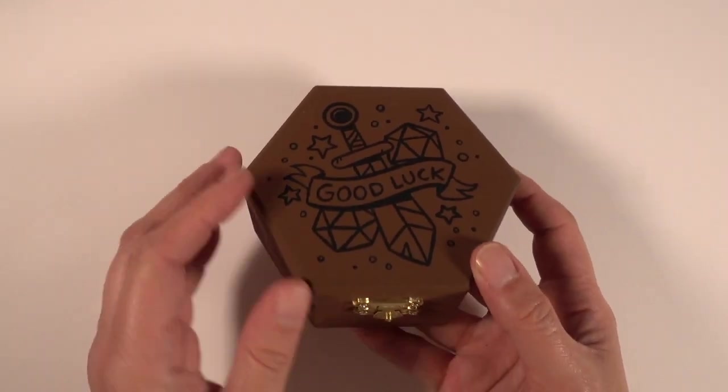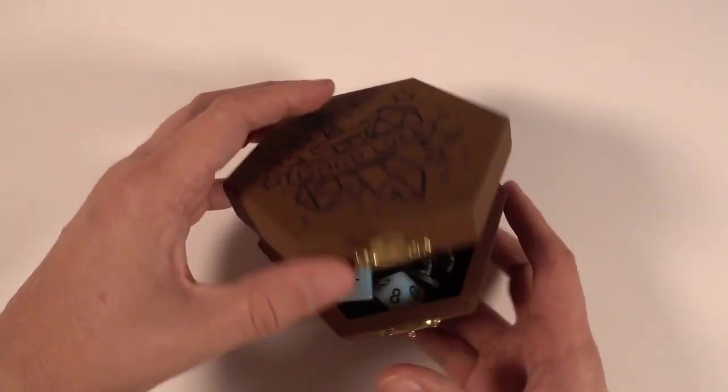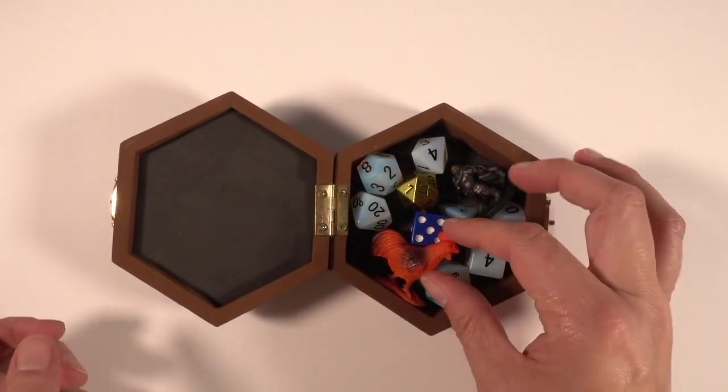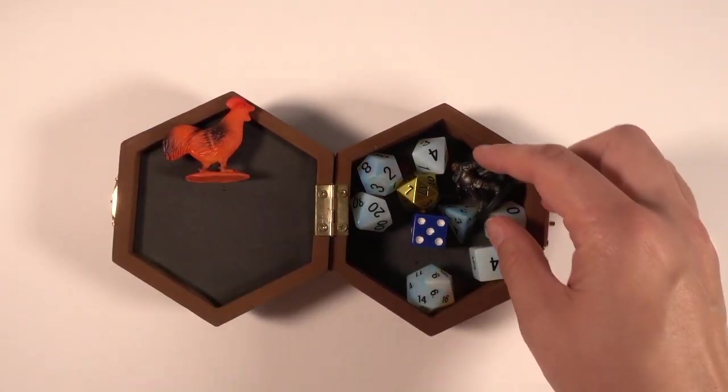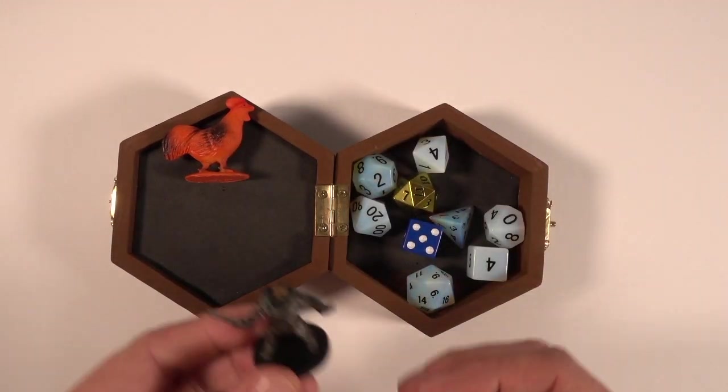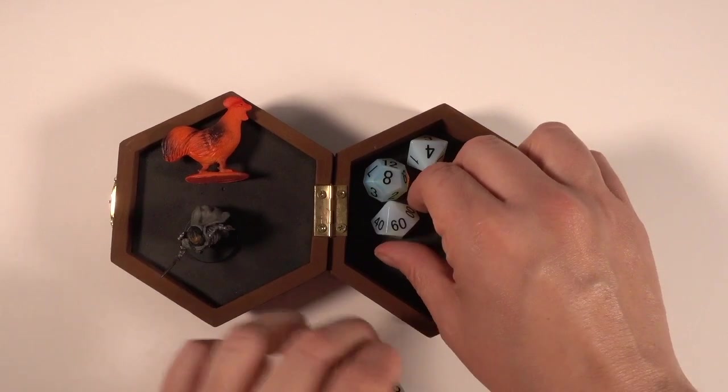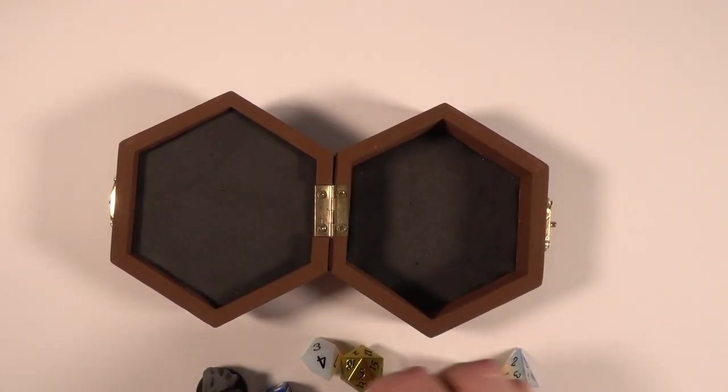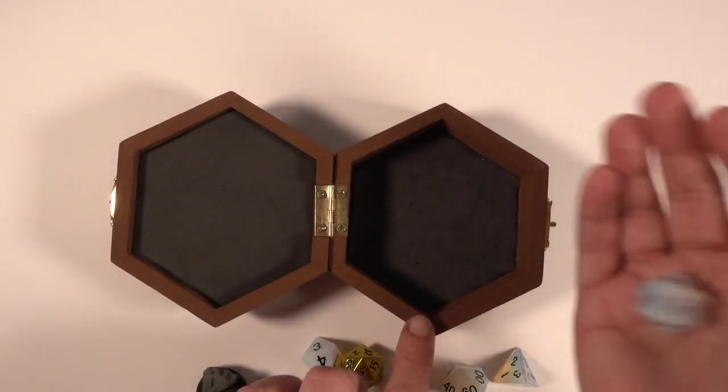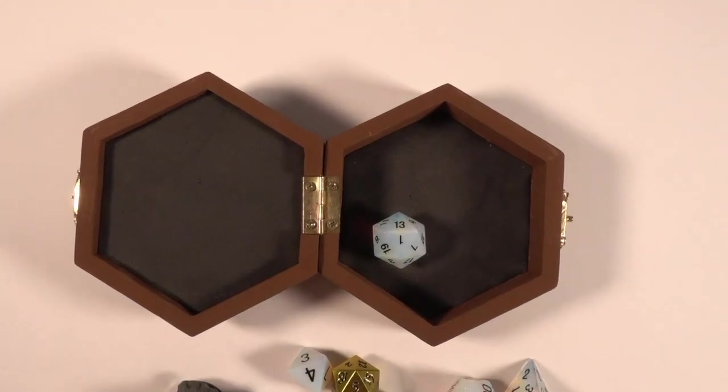So this is the finished result. I'm pretty happy with how it turned out. I usually keep a set of dice and a couple minis in mine. That rooster usually gets used as a random monster. I don't know if you guys use weird minis for stuff. And if you take everything out you can even use it to roll dice in, and hopefully you roll better than I do.